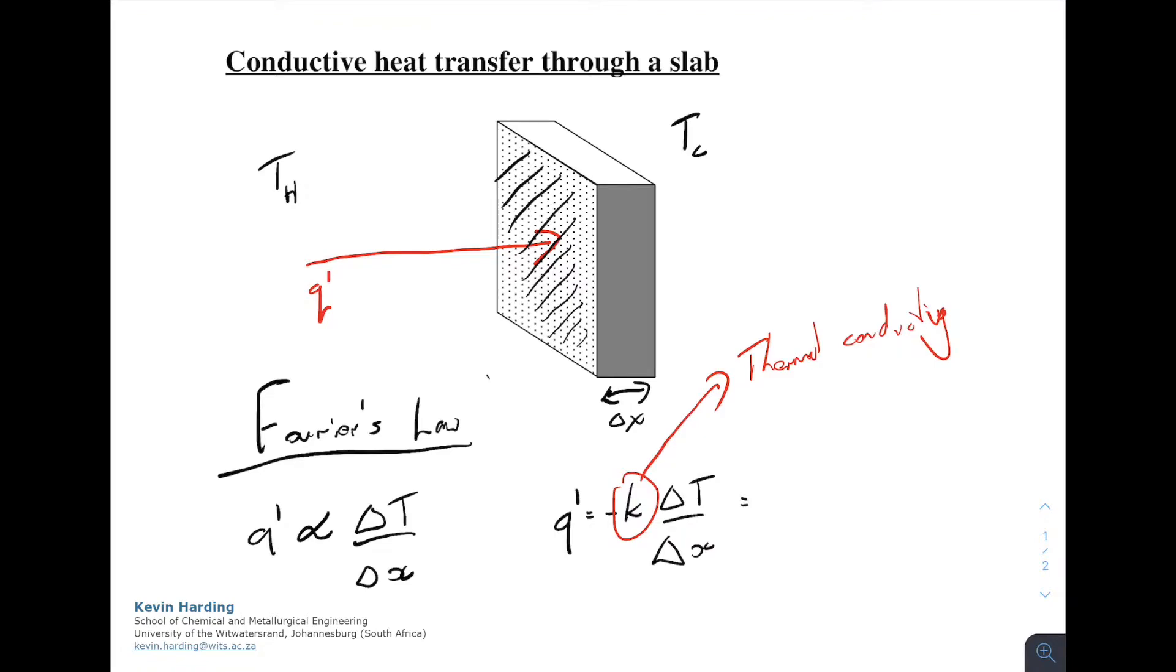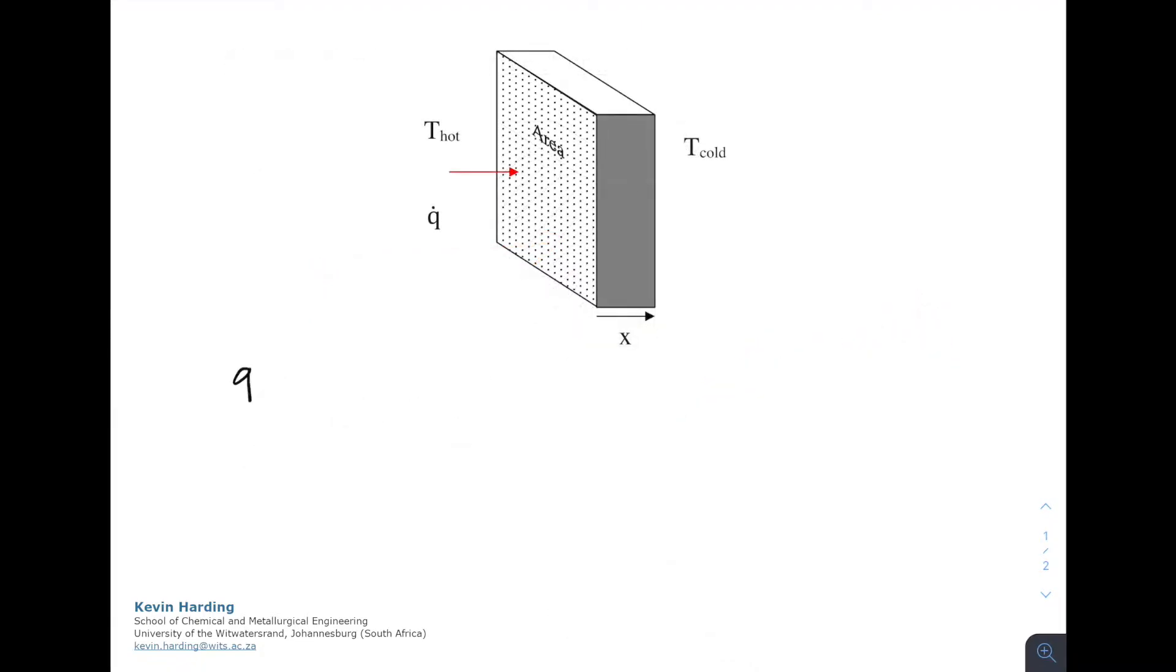Writing this more mathematically correct, Q prime equals minus K delta T delta X. If we want this as a heat transfer rate instead of flux, Q becomes minus K A dT dx. Q dot is in units of joules per second, or more commonly written in watts.